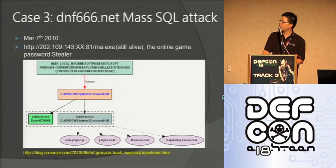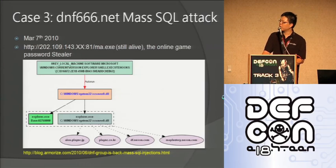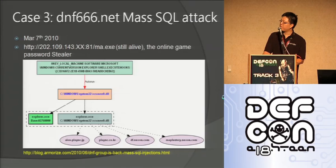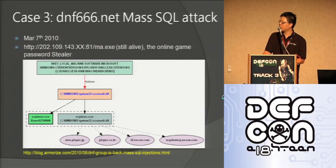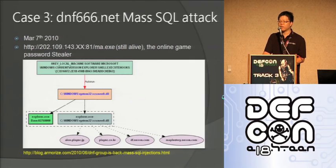Case number three is the dfn666.net samples that we collected a few months ago through the massive SQL injection attack that has been launched starting March. These malware were used as a shell executor and log-on hook, meaning it will hook your Explorer so that once you get infected, it will try to connect to online games and steal your username and password for those games. We have a very detailed story about this on our blog, and this attack is still ongoing.